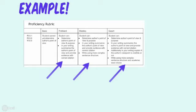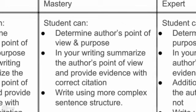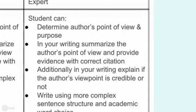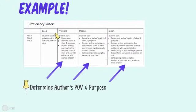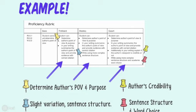Looking closer at the rubric: proficient means students can at least determine the author's point of view and purpose and summarize those points with evidence in their writing. Mastery is all of the above plus more complex structure. Expert adds academic word choice and evaluating author's credibility. So the basic breakdown is: identify author's purpose and point of view, then slight variation in sentence structure, then credibility and word choice. As I create the rubric and think about the end task, I break it down and decide what skills I need to build for students to be successful.